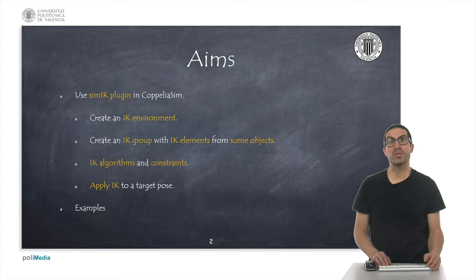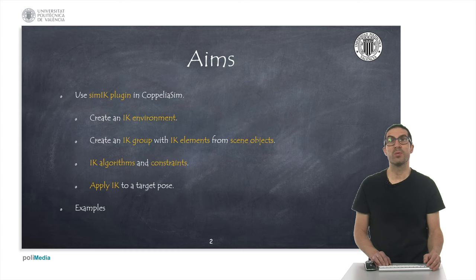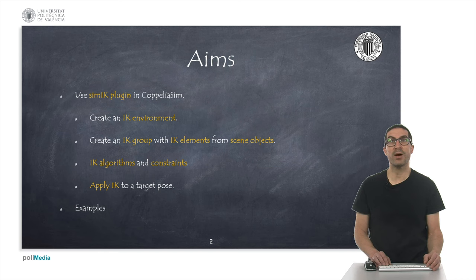The aims of the presentation are to explain how to use the SIM-IK plugin to solve the inverse kinematic problem. I will explain how to create an environment with all the elements that the plugin needs from scene objects. We will see a couple of algorithms to solve the inverse kinematics and what kind of constraints we can include. Finally, we will see how to solve the inverse kinematic problem and how to apply the calculated values to joint positions to actually achieve a pose.